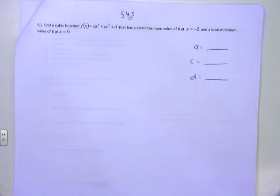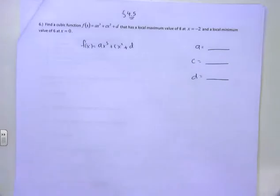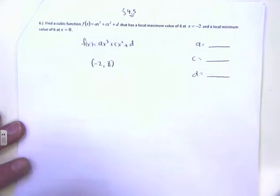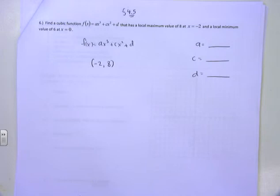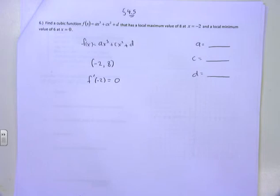Let's write down the information and talk about what it means. My model is f(x) = ax³ + cx² + d. It has a local maximum value of 8 at x = -2. That tells me two things: first, I have an ordered pair — the point is (-2, 8). But it's also telling me it's a maximum. Maximums or minimums — the derivative is equal to 0. So that also tells me f'(-2) = 0. That's a lot of information from that one little sentence.